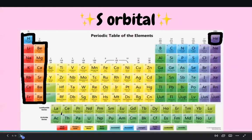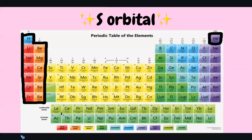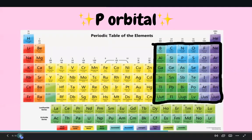Let's jump into the properties of the elements in each orbital. First, we have the S orbital or S block. These elements are mostly metals, except hydrogen and helium, which are gases. They are all very reactive metals, so they need to be stored under oil in laboratories, and they lose their outermost electrons to form cations, or a positively charged ion.